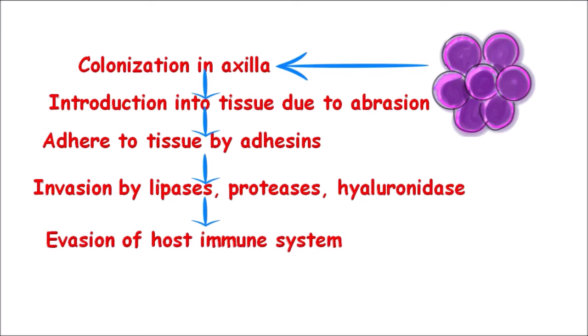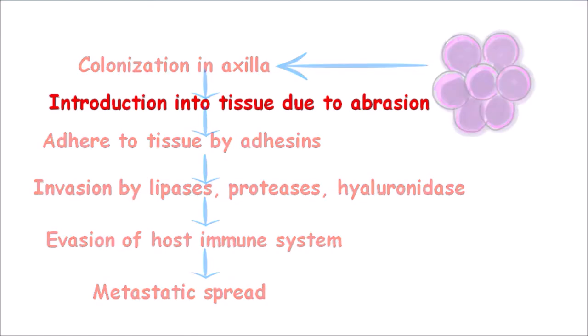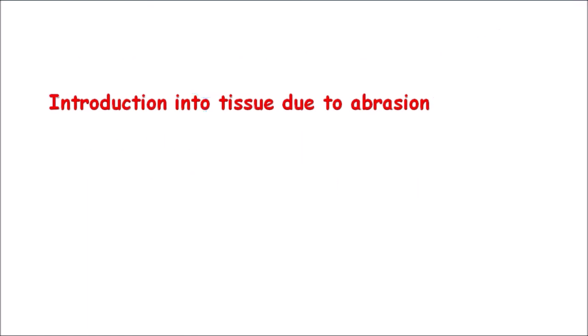Then it evades the host immune system with the help of Protein A, which inhibits opsonization and phagocytosis. After this, it may spread by metastasis through the blood or the hematogenous route to other organs and affect the system.